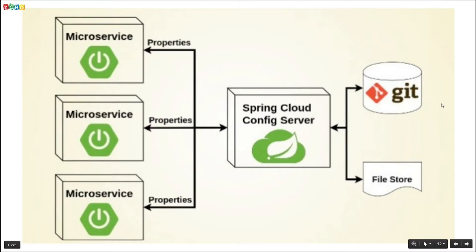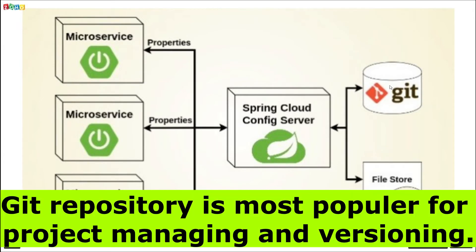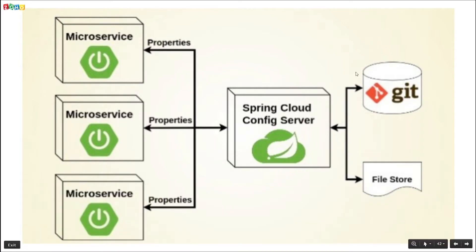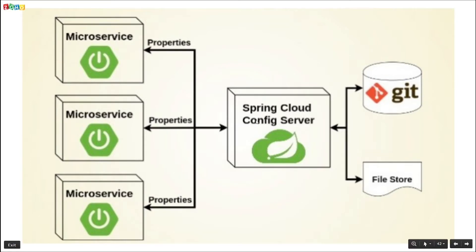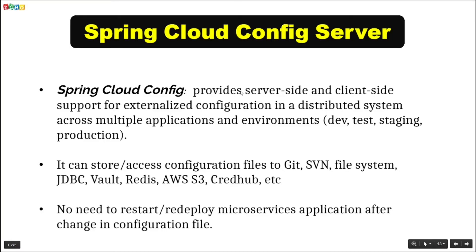Spring Cloud Config Server uses a Git file store and many other options to store configuration files. In this video we will talk about Git-backed storage. Whenever we need to change any configuration file, we make those changes and once we commit to Git, the Spring Cloud Config Server automatically gets the updated value and the respective microservice also gets that changed value — without a restart or redeploy — via the Spring Cloud Config client.